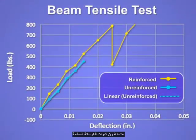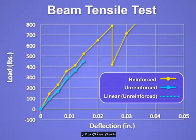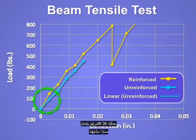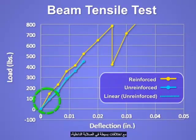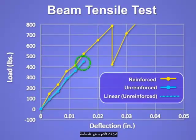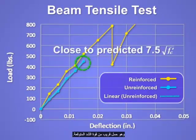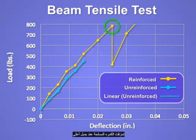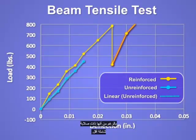We can compare the unreinforced and reinforced concrete beams by looking at their load-deflection curves. Initially both beams followed a similar path, with slight differences in initial stiffness probably due to changes in support conditions. The unreinforced beam failed as soon as initial cracking occurred at a load of about 450 pounds, a load close to the predicted tensile strength. The reinforced beam cracked at a higher load but regained its strength quickly, albeit at a lower overall stiffness.